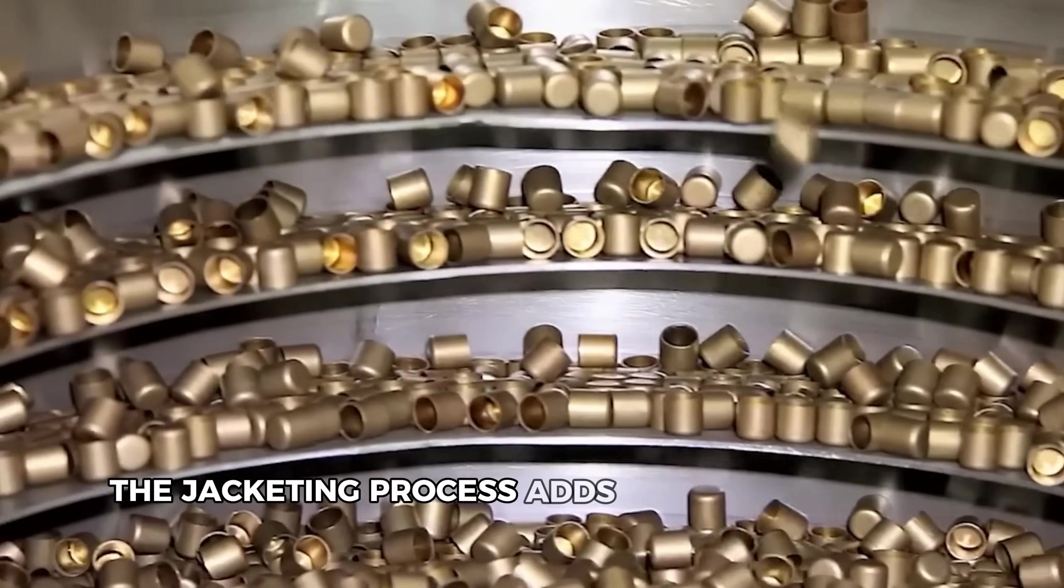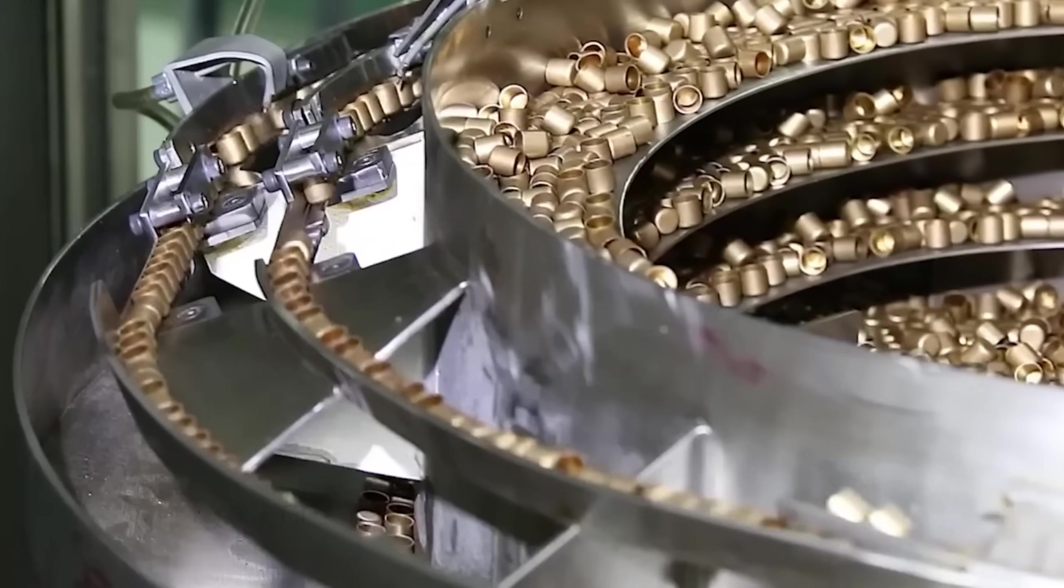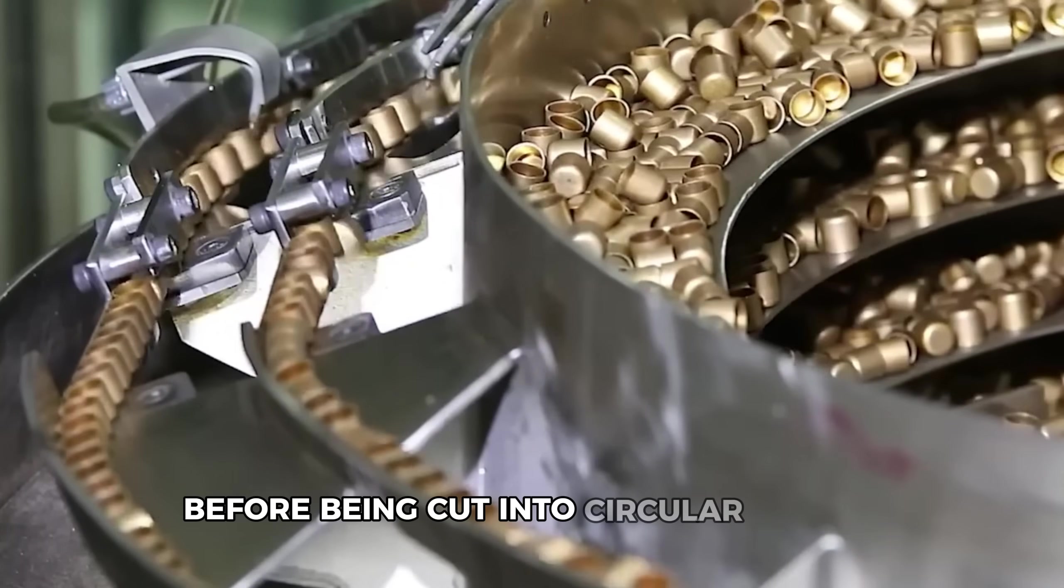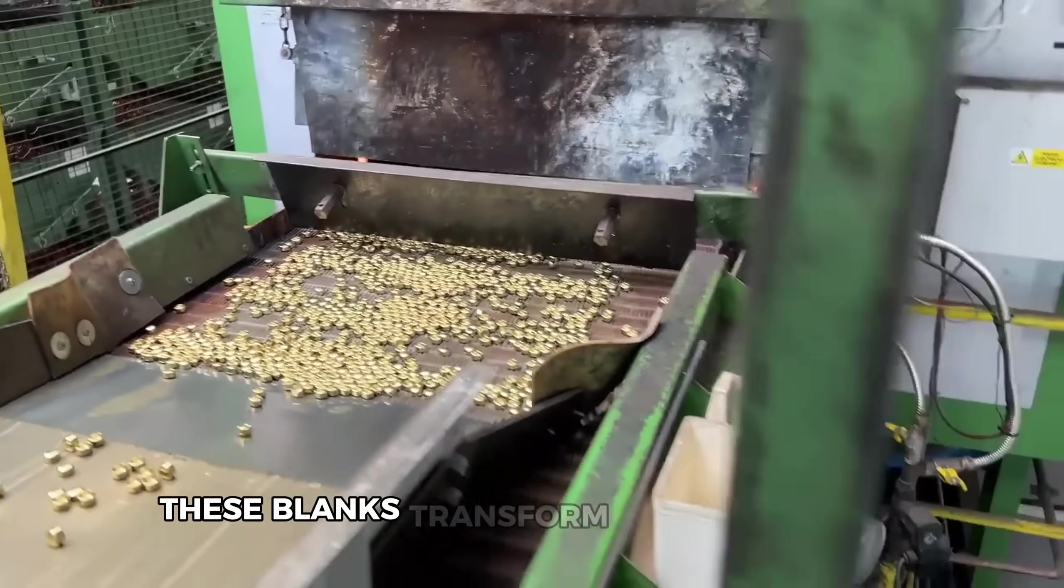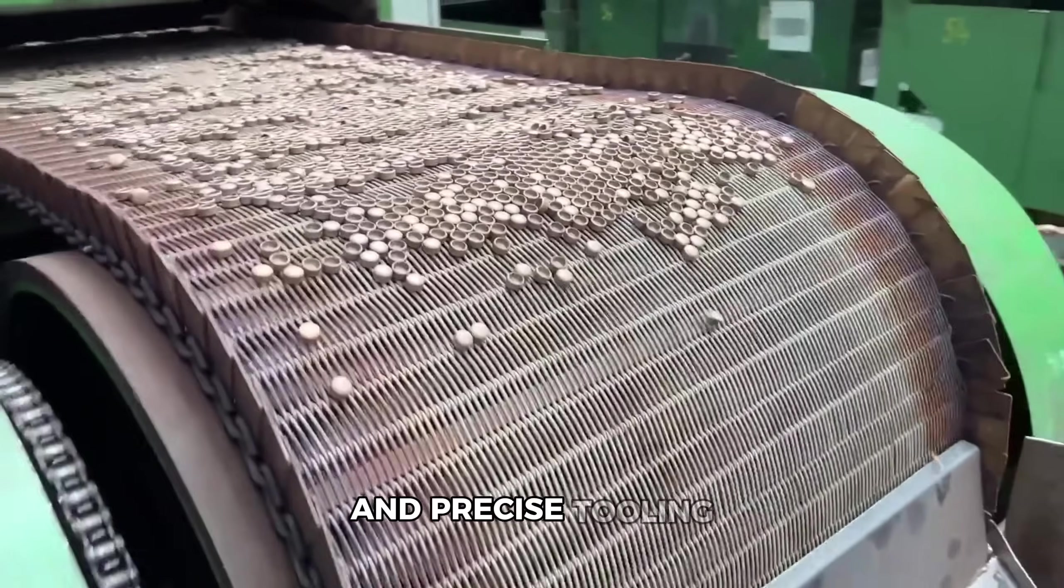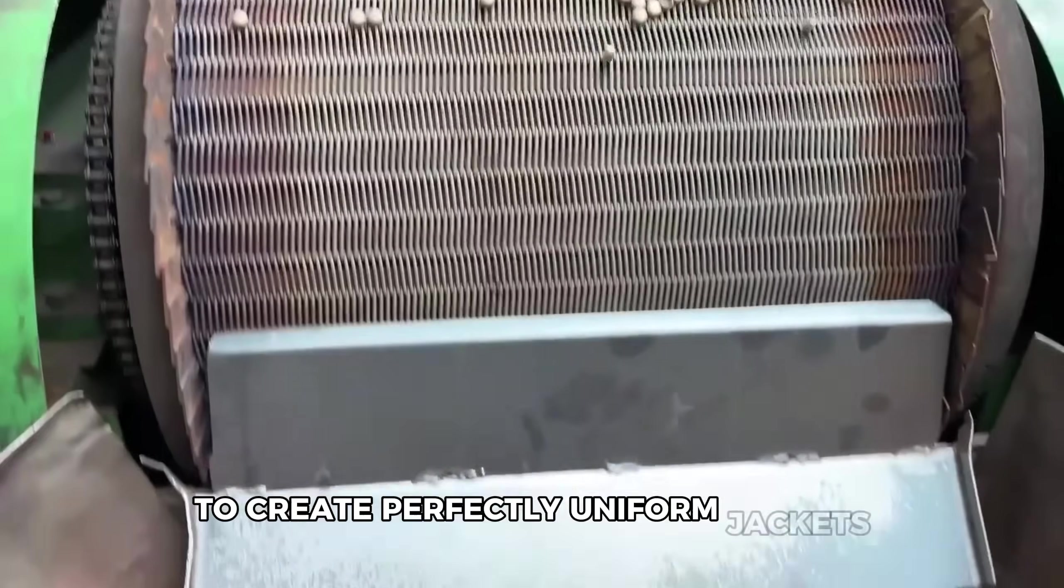The jacketing process adds another layer of complexity. Copper sheets are rolled to precise thicknesses before being cut into circular blanks. These blanks transform into cup shapes that eventually envelop the lead cores. The operation demands immense pressure and precise tooling to create perfectly uniform jackets.